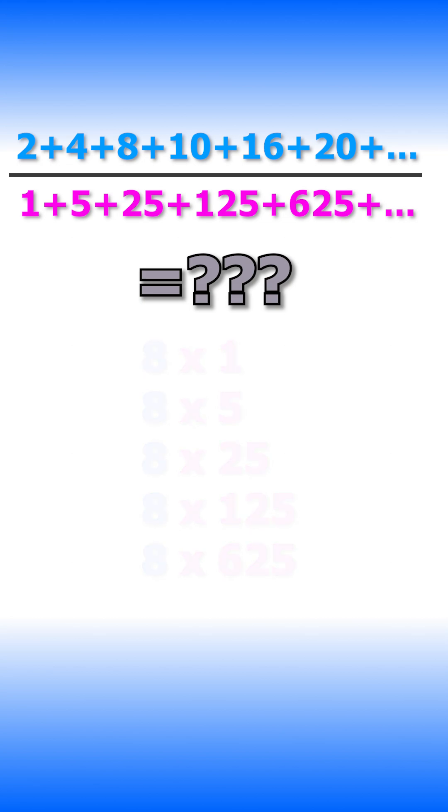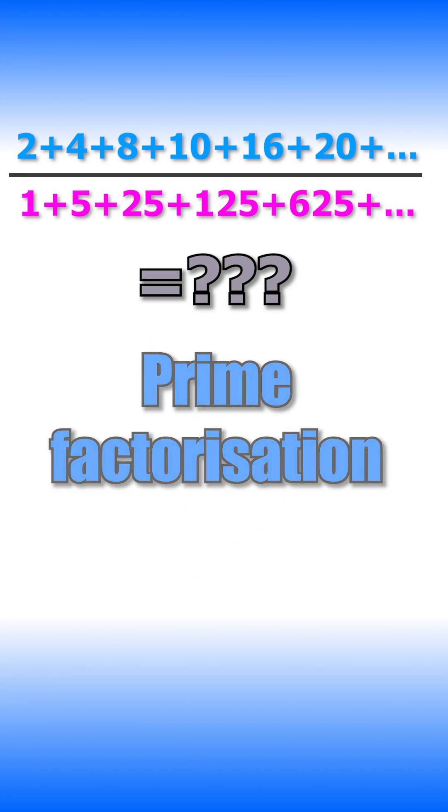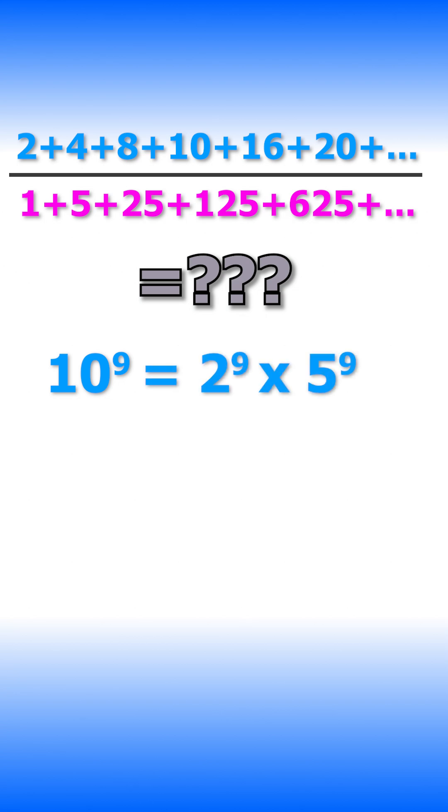To work out how many times we can do this, it helps to think about the prime factorization. A billion is 10 to the 9, or 2 to the 9 times 5 to the 9.